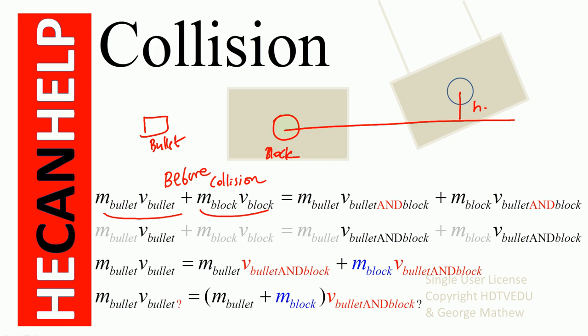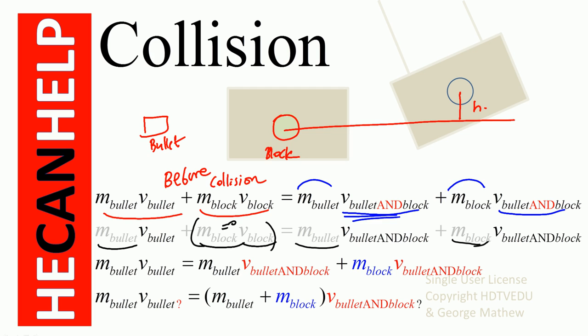Why do bullet and block share the same velocity after collision? Because the bullet gets embedded into the block and both move together. The masses are different, but their velocity after collision is the same. We know the mass of the bullet and mass of the block. We don't know the velocity of the bullet before collision, and we also don't know the velocity of the bullet-and-block after collision — so we have two unknowns.